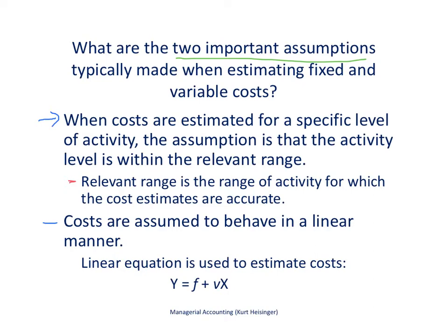If we are estimating using historical information to estimate future costs, and that estimate in the future is using a level of activity that is much, much higher or much lower than historical information, we may have distorted estimates based on that information. For example, if historically we've produced anywhere from 2,000 to 4,000 units in any given month, and suddenly we expect to produce 7,000 units in the future, it would be very difficult to use that historical information without adjustments. That's an example of being outside of the relevant range and needing to make adjustments to get accurate estimates.